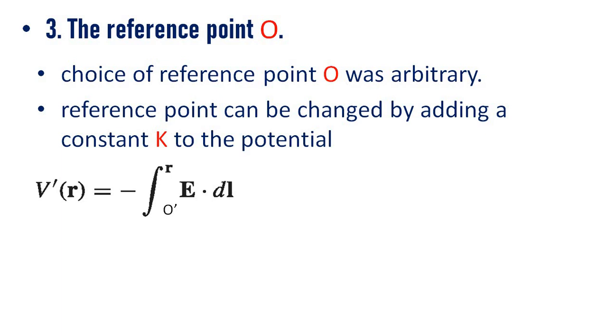Now let us change the reference to a new position O prime. Then, potential V prime of r, V dash of r equal to minus integral O prime to r E dot dl.